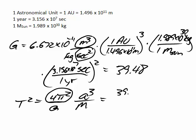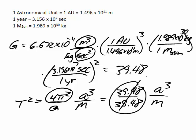So, we have 39.48 over 39.48 a cubed over m. In other words, this goes away. It's just equal to 1. So, we have T squared equals a cubed over m. As long as we measure time in years, semi-major axis in astronomical units, and mass in solar masses, this equation is true. It only works for those units, but it is very, very convenient.